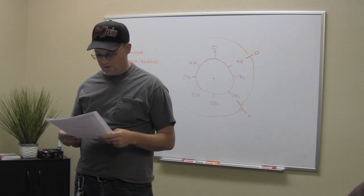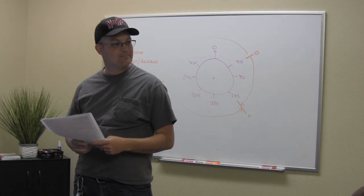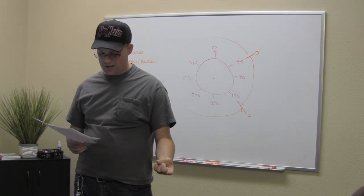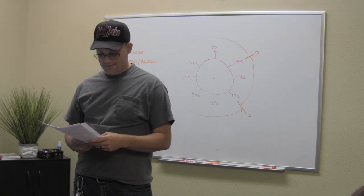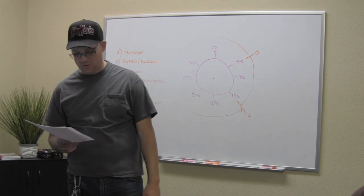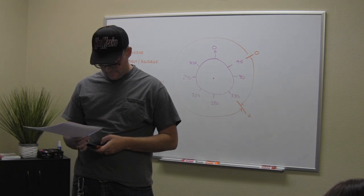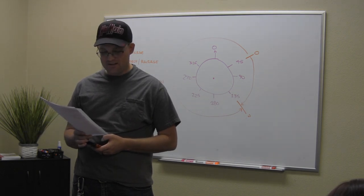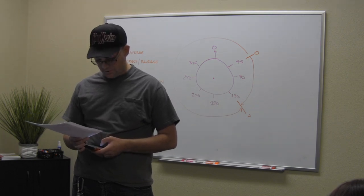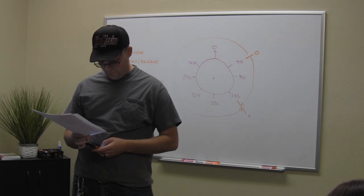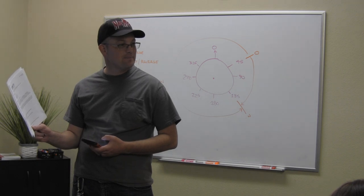Question ten: the strip description for a utility pole easement has three centerline courses given in chains. Add them up: 42.6 plus 12.4 plus 4.2 equals 59.2 chains. Notice that 59.2 is one of the answers — that's a trick to throw you off. You've got to multiply by 66 feet per chain to get 3,907.2 feet. Then divide by 3.2808 to convert to meters. The question asks for nearest centimeter, which means two decimal places — so you don't even need to finish the math if you pick the only answer with two decimal places.